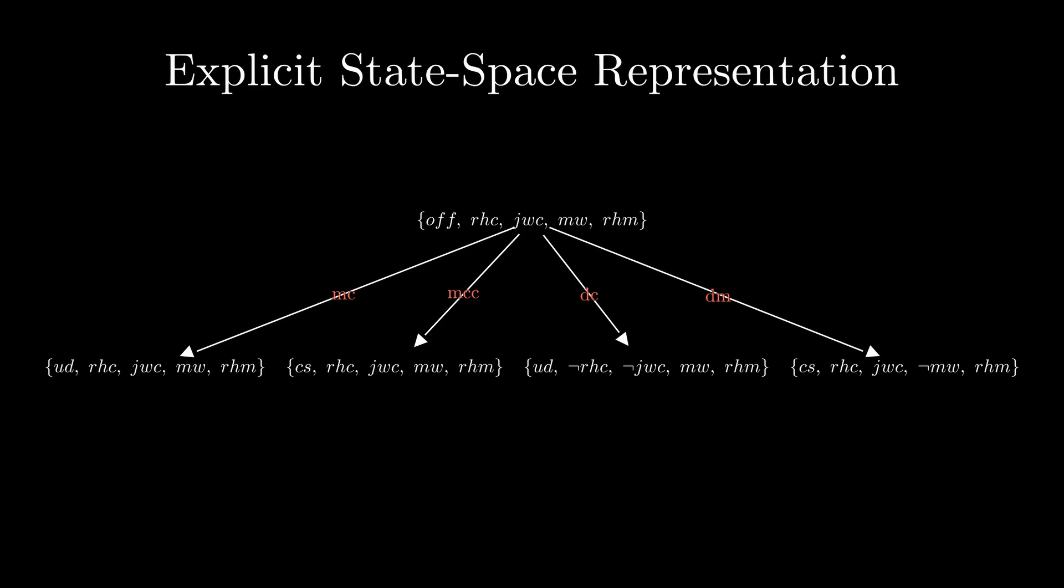You can explicitly list out all the possible states and the resulting states when an action is performed. It can be thought of as a lookup table, where for a certain combination of state and action, there is a resulting state. If none match, then it is assumed that the agent won't do anything.